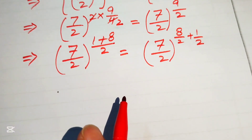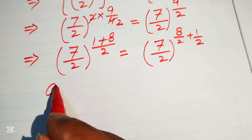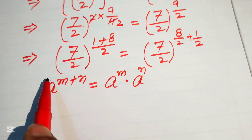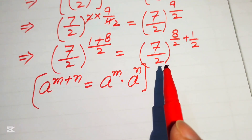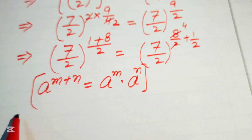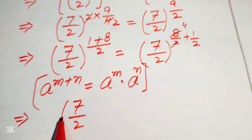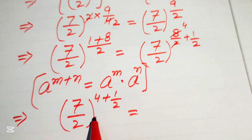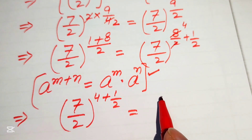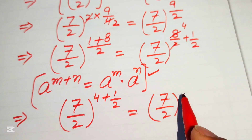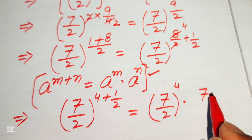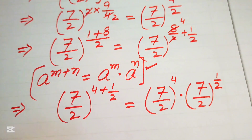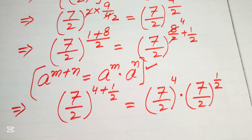We use another exponent law: a to the power of m plus n equals a to the power of m times a to the power of n. Applying this, we see that 8 over 2 equals 4, so we obtain 7 over 2 to the power of 4, multiplied by 7 over 2 to the power of 1 over 2.